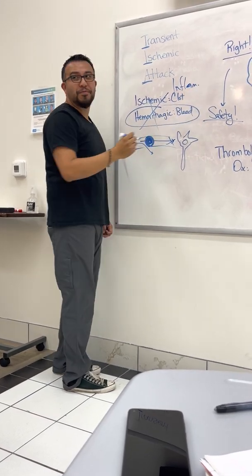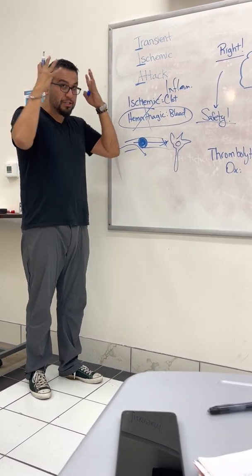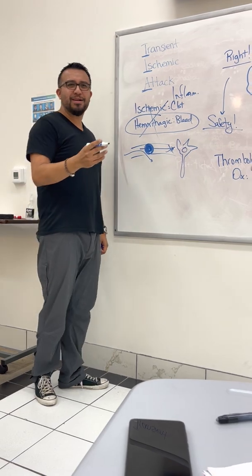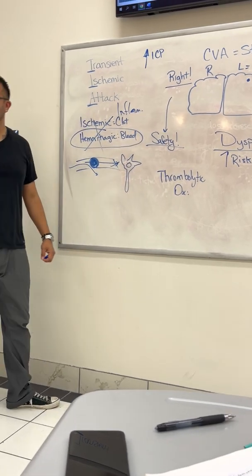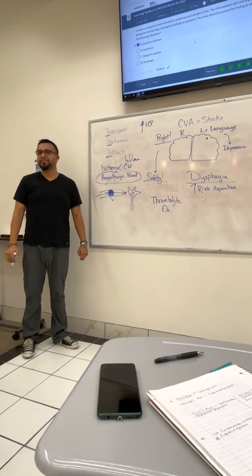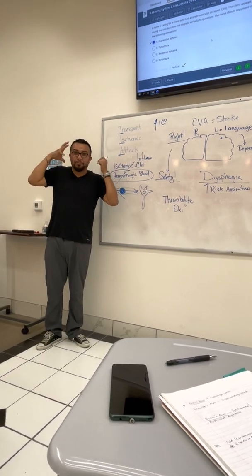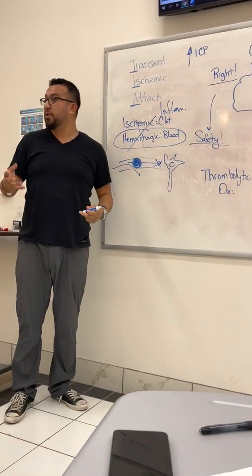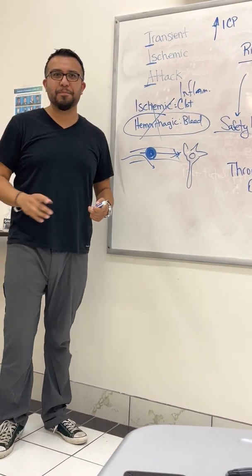Both ischemic and hemorrhagic stroke patients will develop inflammation in the brain, which means increased ICP — intracranial pressure — in both cases. With hemorrhagic stroke, blood fills the cranial cavity. With ischemic stroke, necrosis of tissue causes inflammation. Either way, ICP is going to increase.